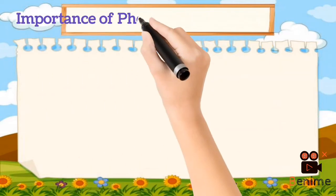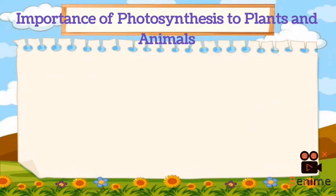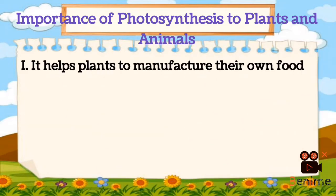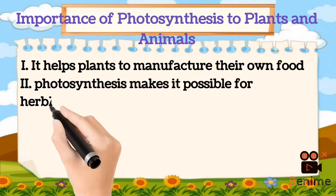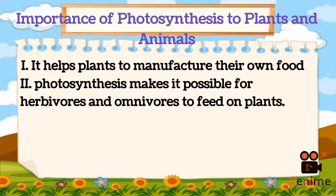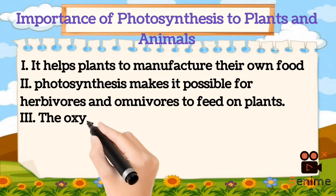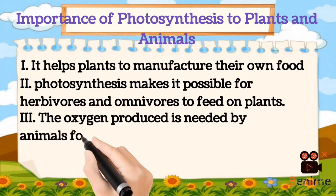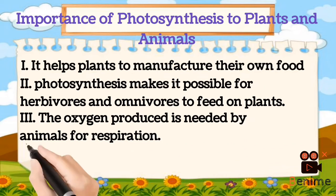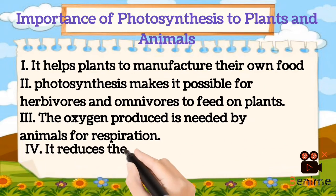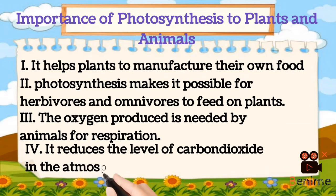Importance of photosynthesis to plants and animals. It helps plants to manufacture their own food. Photosynthesis makes it possible for herbivores and omnivores to feed on plants. The oxygen produced is needed by animals for respiration. It also reduces the level of carbon dioxide in the atmosphere.